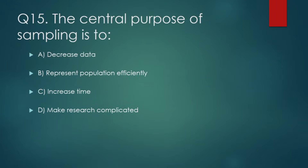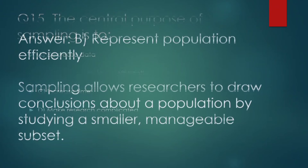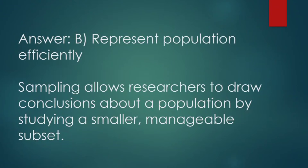The central purpose of sampling is: (A) to decrease data, (B) represent population efficiently, (C) increase time, (D) make research complicated. Correct answer: B — represent population efficiently. Sampling allows researchers to draw conclusions about a population by studying a smaller, manageable subset.